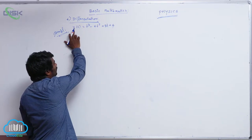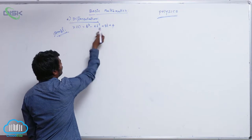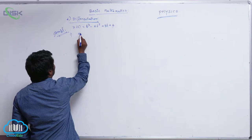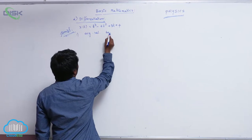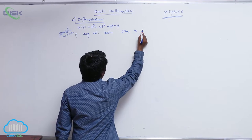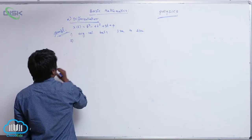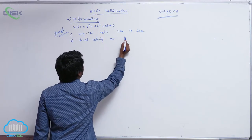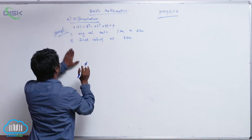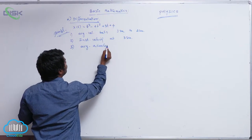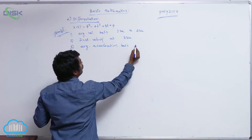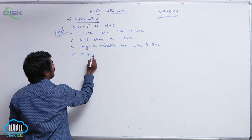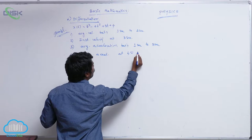If x is a function of time — meaning the position of the object varies with time as t³ - 6t² + 8t + 4 — then let us answer these questions: What is the average velocity between 1 second and 2 seconds? What is the instantaneous velocity at 3 seconds? What is the average acceleration between 1 second and 3 seconds? And what is the instantaneous acceleration at t = 4 seconds?